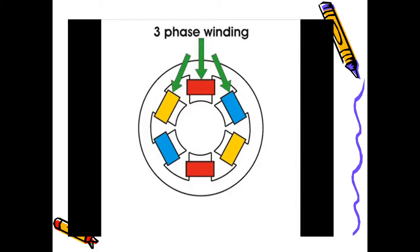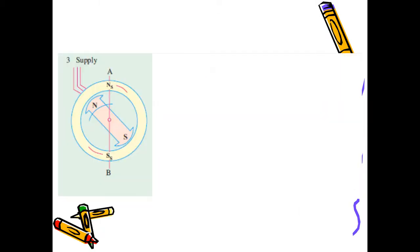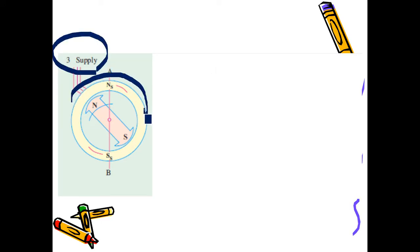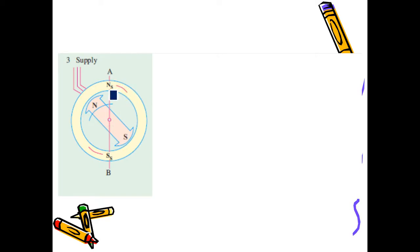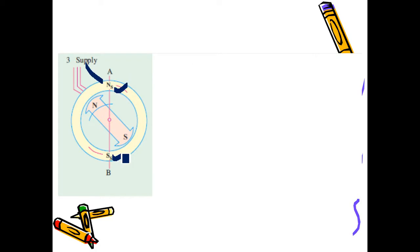Now the stator of the synchronous motor has a rotating magnetic field. The three-phase AC supply sets up a revolving flux. The rotor is supplied by DC, so the rotor becomes a magnet. At a particular instant you can see there is an N pole and S pole in the stator. For simplicity we are considering a two-pole synchronous motor.